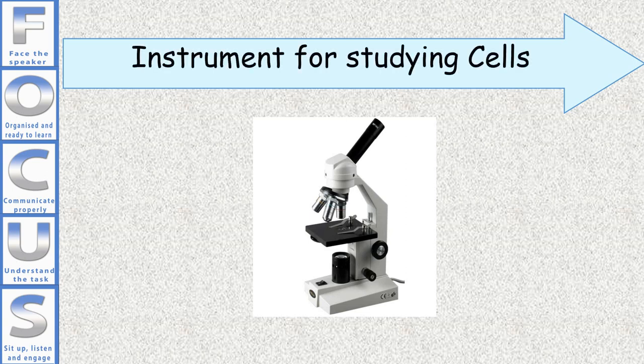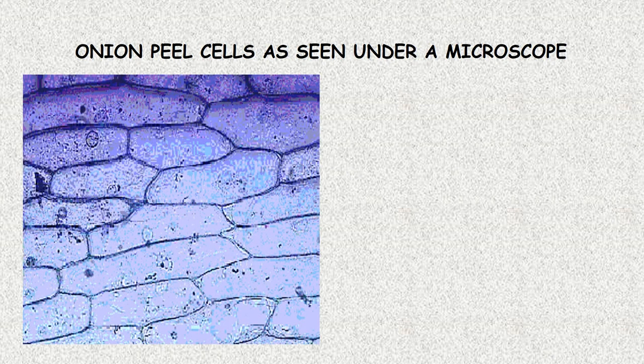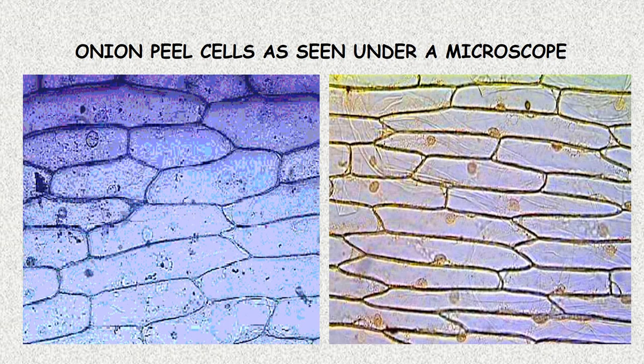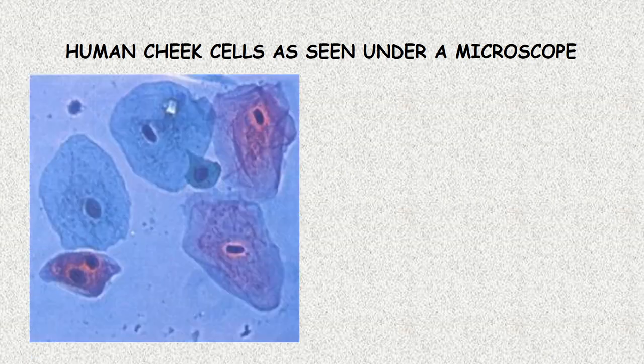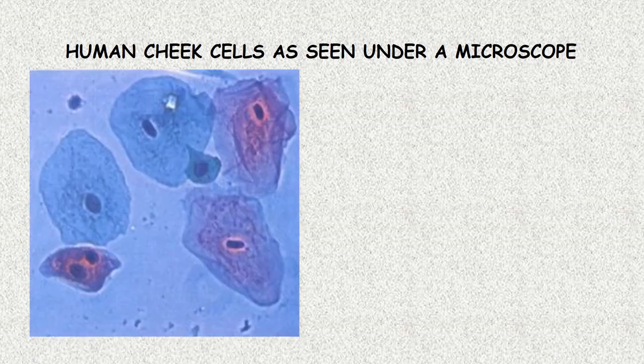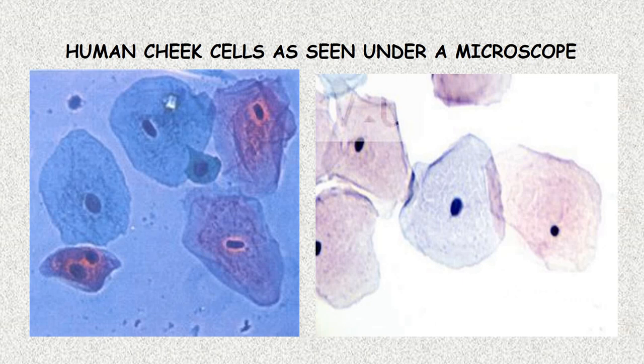Instrument for studying cells: Microscope. Here, you can see onion peel cells as seen under a microscope. Here, you can see human cheek cells as seen under a microscope.